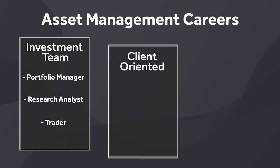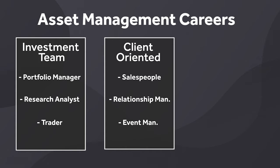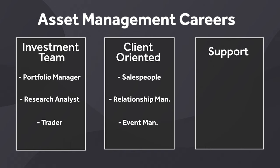The second big category is client-oriented roles — salespeople, relationship managers, event managers — whose goal is to attract new investors and keep existing ones happy. The third category is the support team — legal, HR, compliance, and so on — ensuring the other two categories can do their work smoothly. The investment team is the most prestigious, but all three are essential; if one disappeared, the others couldn't function well.